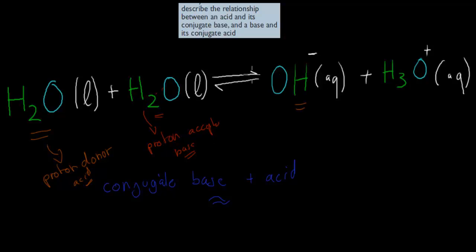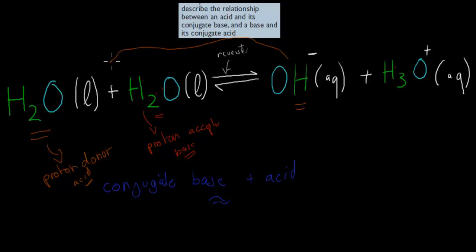But we can also look at the reversible reaction — because this is a reversible reaction, it can go the other way. What happens if we go the other way? The hydroxide group grabs a hydrogen and goes back to water. So this goes and grabs one more hydrogen ion, which is just a proton, making it the acceptor.